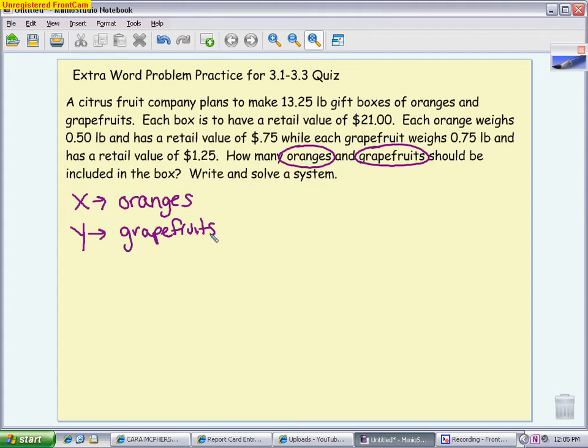If I have two variables, I have to have two equations. I have to have the same number of equations as number of unknowns. So I need to figure out what two things I can write about and make an equation out of it. So if you look back to the problem, I know about two things. I know about weight and I know about money. So I'm going to write an equation for each.